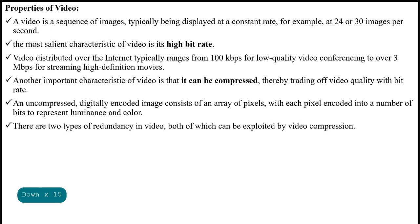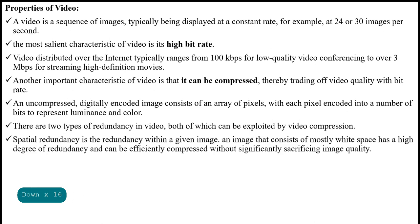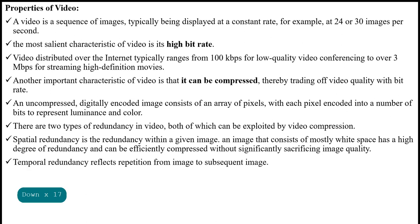There are two types of redundancy in video, both of which can be exploited by video compression. Spatial redundancy is the redundancy within a given image — an image that consists of mostly white space has a high degree of redundancy and can be efficiently compressed without significantly sacrificing image quality. Temporal redundancy reflects repetition from one image to the subsequent image.